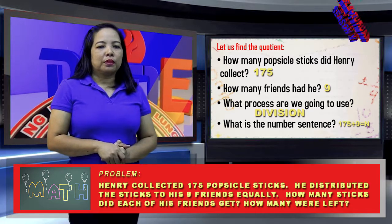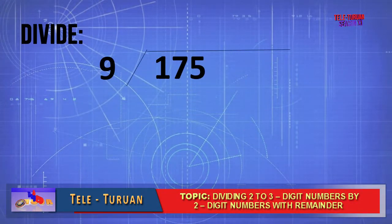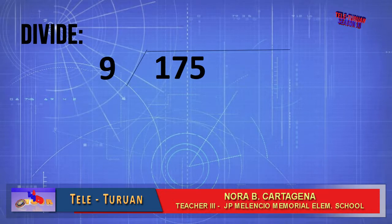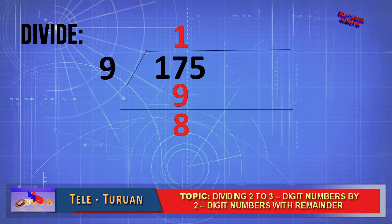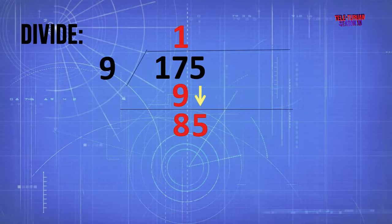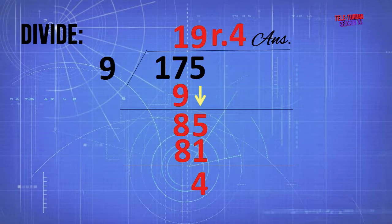To solve this equation, there are steps to follow: divide, multiply, subtract, bring down. In 175 divided by 9, the first step is divide. Since we cannot divide 1 by 9, we divide 17 by 9. 17 divided by 9 is 1. Second step: multiply 1 by 9 — 1 times 9 equals 9. Third step: subtract 17 minus 9 equals 8. Fourth step: bring down 5, so we have 85. Back to step 1: 85 divided by 9 equals 9. 9 times 9 equals 81. Then 85 minus 81 equals 4. So we have remainder 4. Our answer is 19, remainder 4.